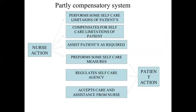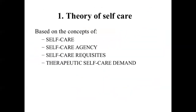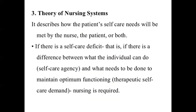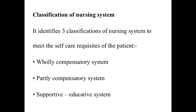To recap, Dorothea Orem's nursing theory is divided into three parts: the theory of self-care, whose basic concepts are self-care, self-care agency, self-care requisite, and therapeutic self-care demand; the theory of self-care deficit, which describes how people can be helped by nursing activities; and the theory of nursing system, which functions through three mechanisms — fully compensatory, partly compensatory, and supportive educative system.